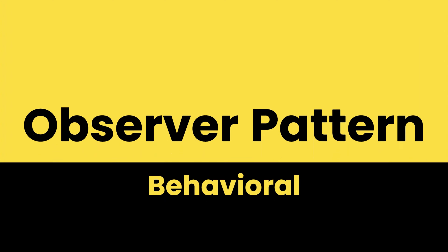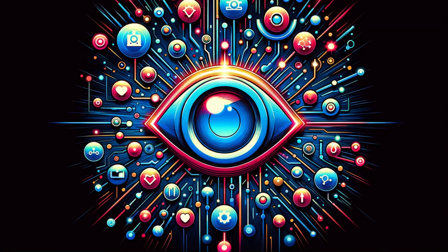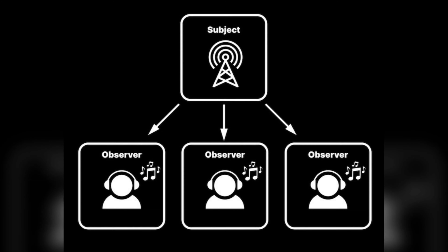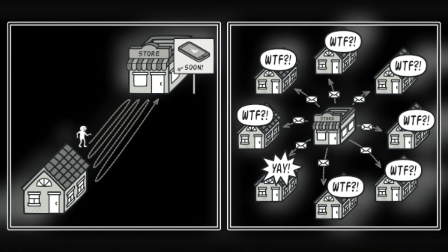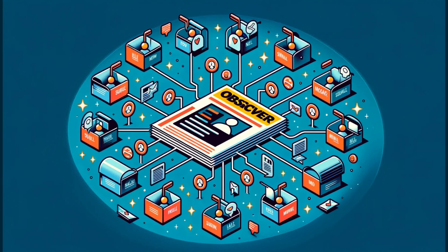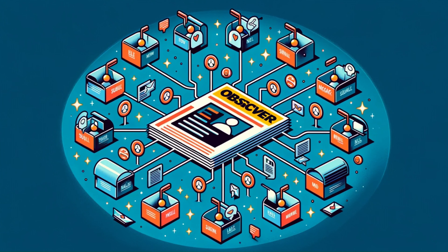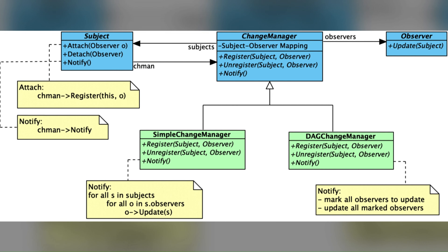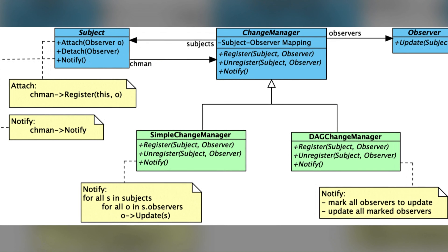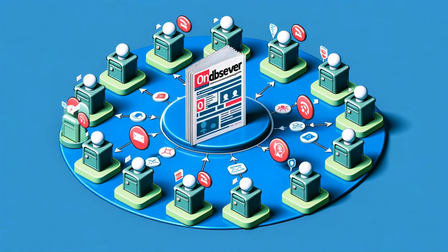The Observer pattern allows an object known as the subject to maintain a list of its dependents, called observers, and notifies them automatically whenever its state changes. Think of it like a magazine subscription — whenever a new issue is published, meaning the state of the magazine has changed, it is sent out to all subscribers who have registered to receive it.